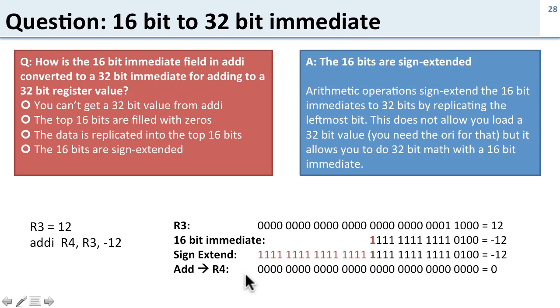We're going to go ahead and add it, and not surprisingly, 12 plus -12 gives us 0. This is how the sign extension allows us to do the 32-bit add to get the right value.